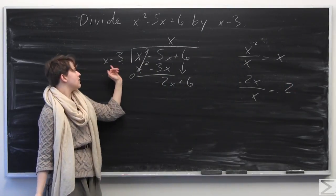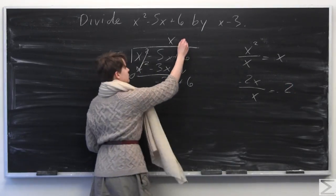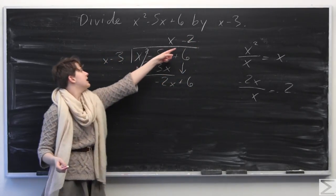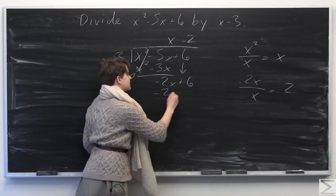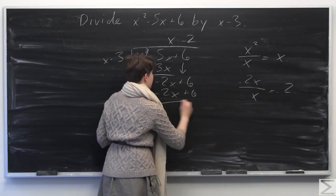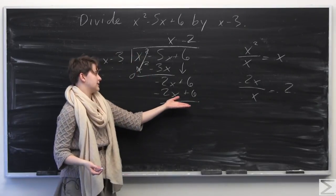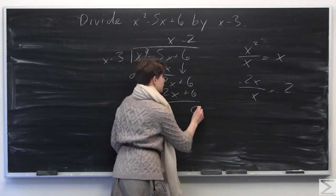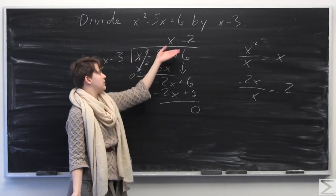We multiply everything by negative 2, writing it above the 6. Negative 2 times x is negative 2x, and negative 2 times negative 3 is positive 6. We subtract this expression from the previous one and they're the same, so we get 0. We have no remainder and we've found our answer.